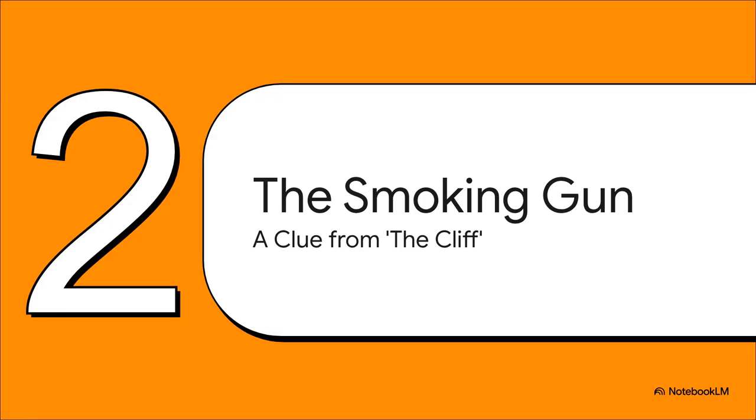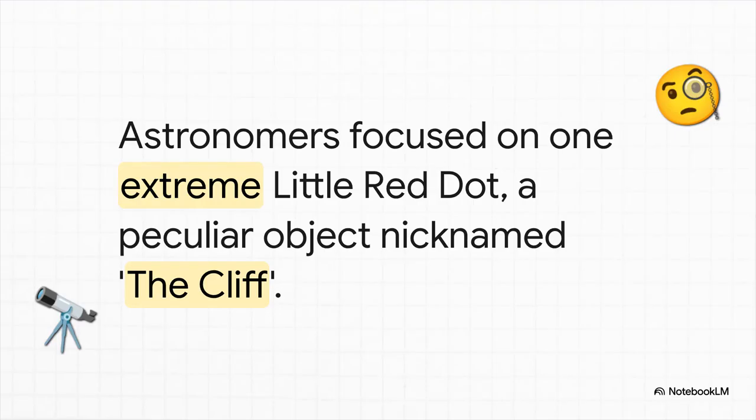But then, just like in a good detective story, the investigators got a lead. What if we focus on one of these little red dots - not just any one, but a really extreme one? The thinking was that maybe its exaggerated features would give up the secret. This particular object got a great nickname: the Cliff. The hope was that if you can crack the code of the most extreme case, maybe that will give you the key to unlock the mystery of all the other little red dots.